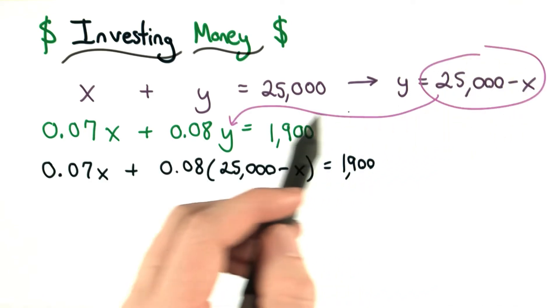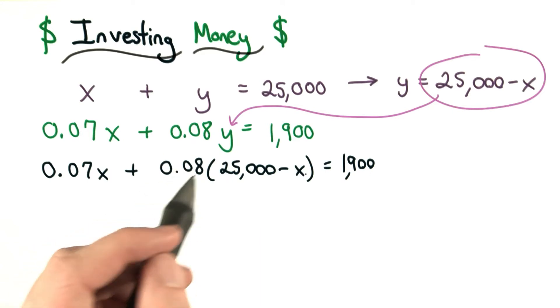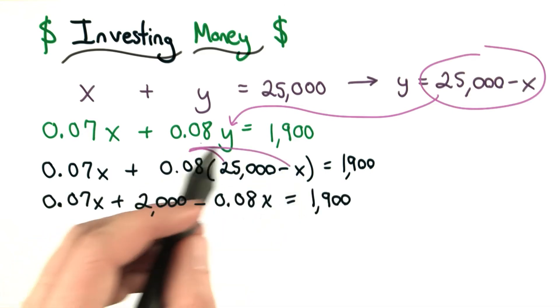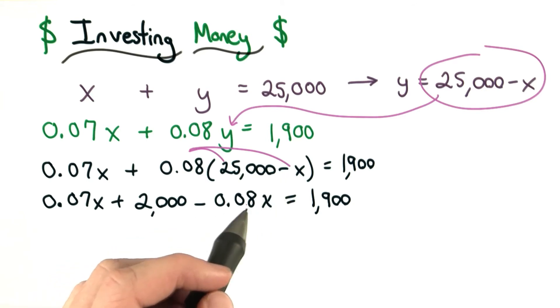Now I perform the substitution, then I can distribute my 0.08 to both terms. Here's my first term, 2,000, and my second term, negative 0.08 times x.